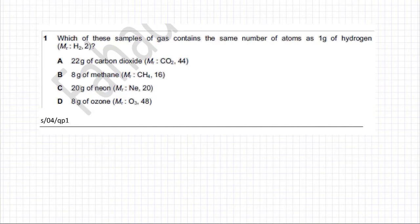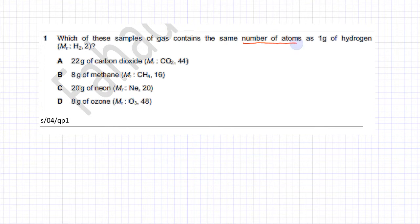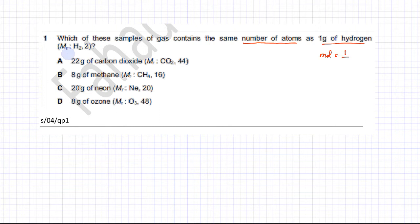This moles question is about moles and number of particles. It asks which of these samples of gas contains the same number of atoms as one gram of hydrogen — note it's asking about atoms, not molecules. To find the moles of hydrogen: moles = mass divided by molar mass, which is 1 gram divided by 2 (the MR of H₂ is provided), giving 0.5 moles of hydrogen.